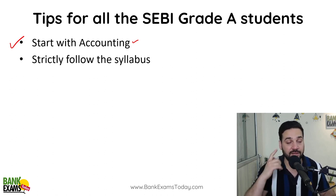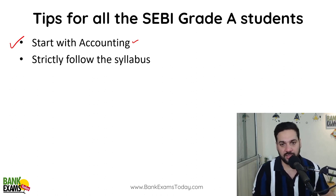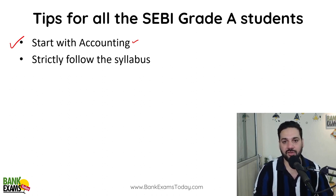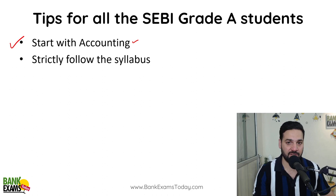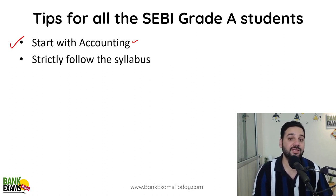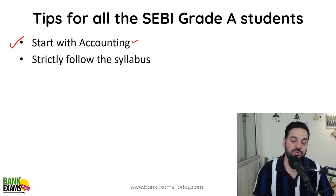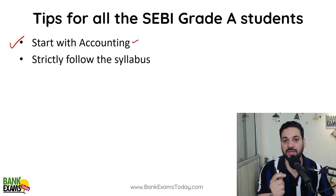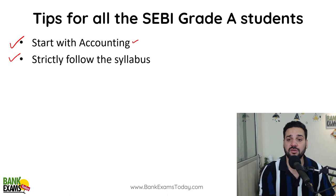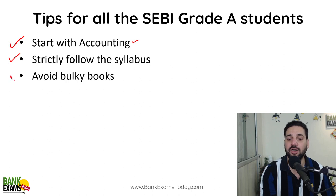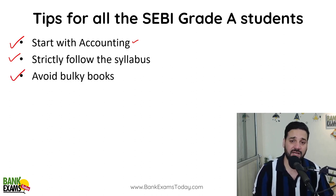For example, Company Law is quite lengthy, but you only need to do certain chapters. Even for cost accounting, students buy the MK Khan & PK Jain book — a 1200-page book — or Prasanna Chandra for financial management, or LM Prasad for principles of management. Those are lengthy books. Please note: the syllabus for SEBI Grade A is limited for these subjects, so strictly follow the syllabus given in the notification.